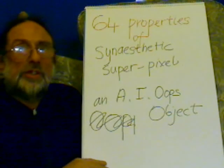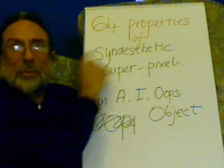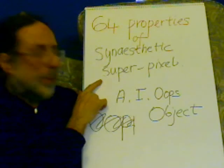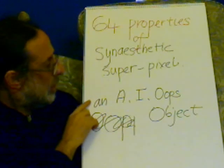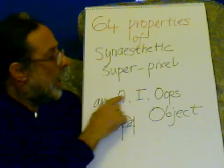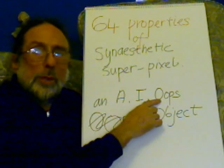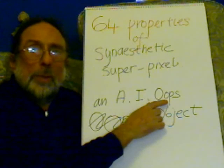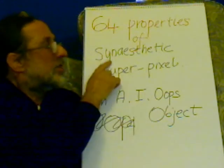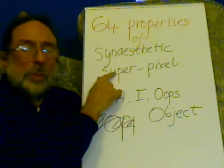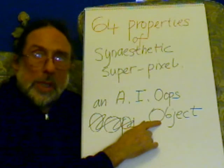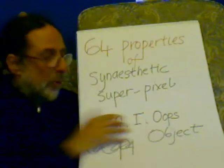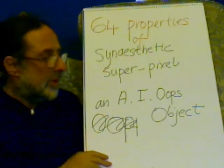The 64 steps are also the 64 properties of the synesthetic super pixel, which is an artificial intelligence object — an object-oriented programming object. The synesthetic super pixel is an OOP object, and these are the 64 properties, each of these steps.